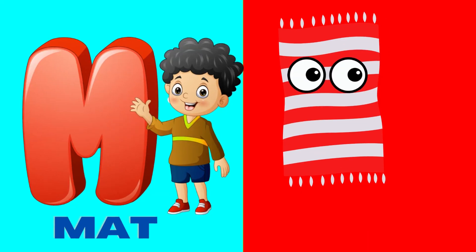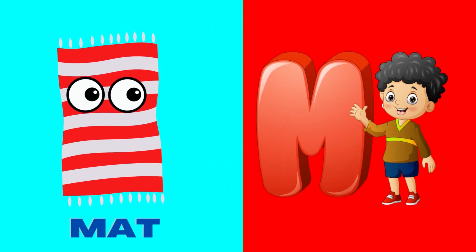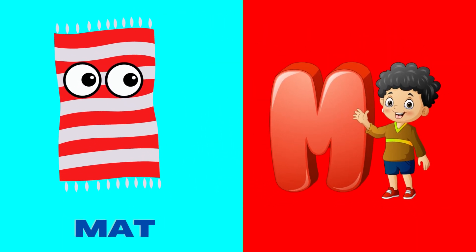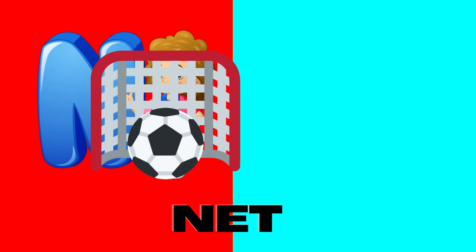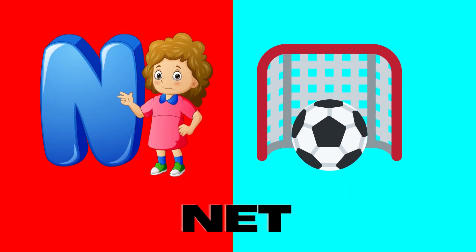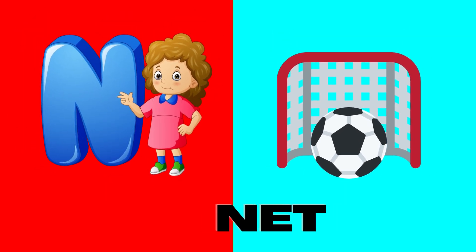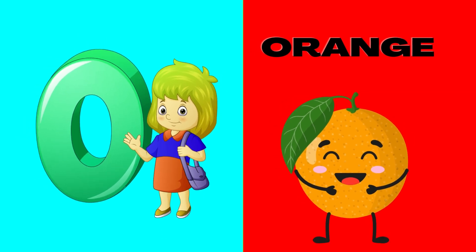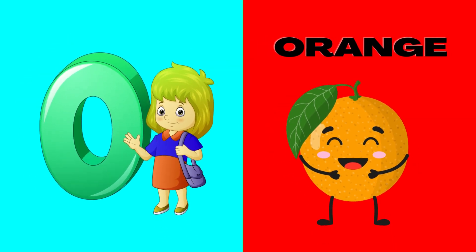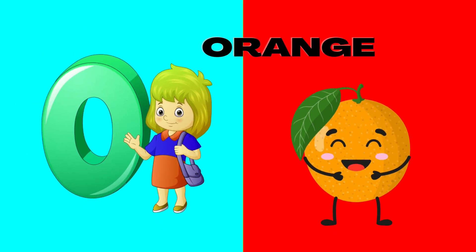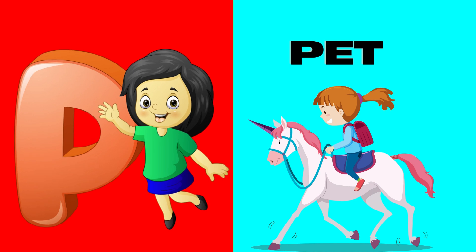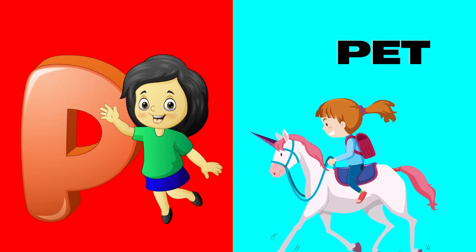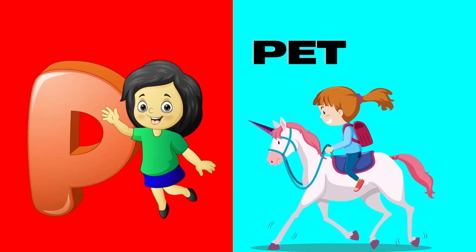M is for mat, m-m-mat. N is for net, n-n-net. O is for orange, o-o-orange. P is for pet, p-p-pet.